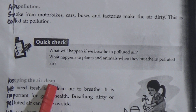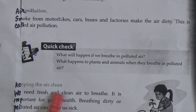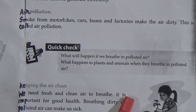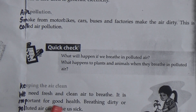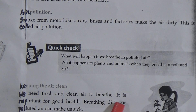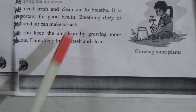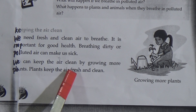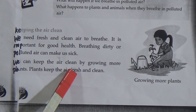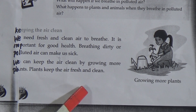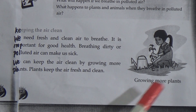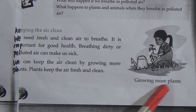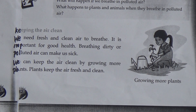Keeping the air clean: We need fresh and clean air to breathe — it is important for good health. Breathing dirty or polluted air can make us sick. We can keep the air clean by growing more plants. Plants keep the air fresh and clean because they take in carbon dioxide from the air and give us oxygen. So we need to plant more trees.